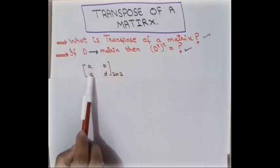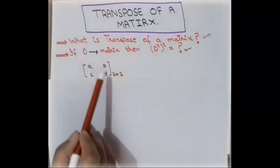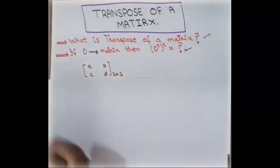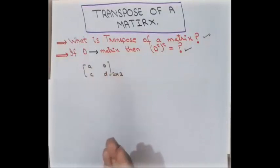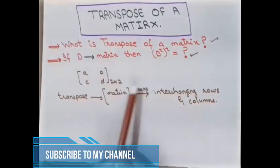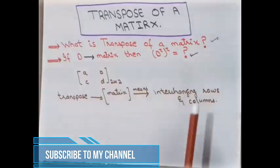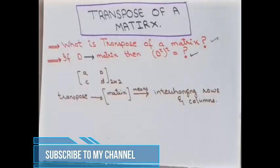The transpose of a matrix — for example, if we take a matrix with order 2 by 2 — is obtained by changing rows into columns and columns into rows. The matrix obtained is called the transpose of this matrix. So when we apply the transpose to any matrix, it means interchanging or swapping the rows and columns of the given matrix.